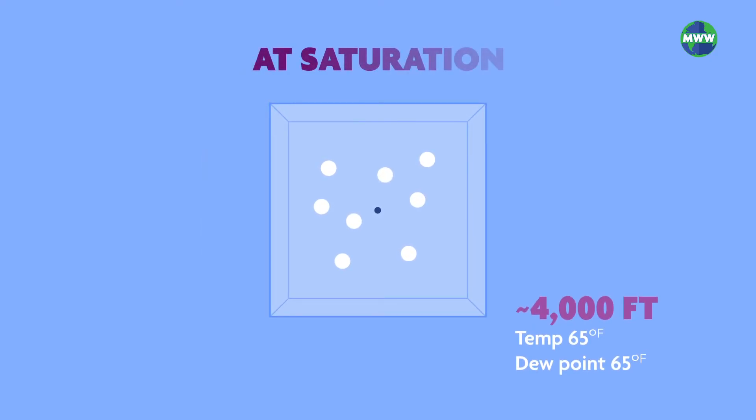Once the parcel reaches saturation or the dew point temperature, water vapor condenses onto tiny particles in the air called condensation nuclei. The resulting water drops combine and create cloud droplets. The accumulation of many cloud droplets forms a cloud.